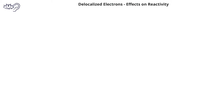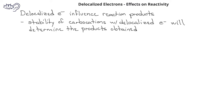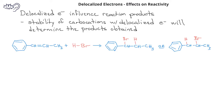The presence of delocalized electrons can influence the products we get in a chemical reaction. In general, the stability of carbocations with delocalized electrons will influence the products when we have addition to an alkene. In this example, we have a carbon-carbon double bond between two carbons next to a benzene ring. If we do addition of hydrogen bromide to that alkene, we could end up with one of two products: bromine on the carbon next to the benzene ring, or hydrogen added to the carbon next to the benzene ring. In fact, we only get the product with bromine on the carbon next to the benzene ring.